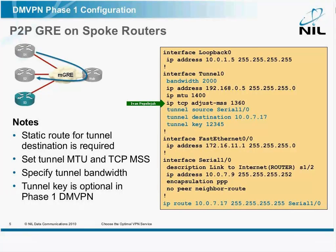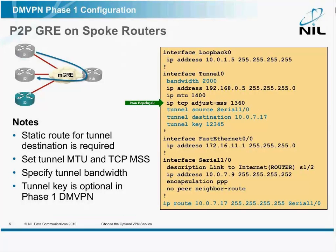In the follow-up reading document, there's a table specifying the maximum MTU for particular combinations of IPsec parameters. 1400 is safe — Cisco recommends 1400 in some documents just to be on the safe side. IP TCP adjust MSS has to be 40 bytes less than the MTU. In Phase 1 DMVPN, the tunnel key parameter is optional, so you don't have to use it.